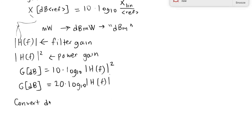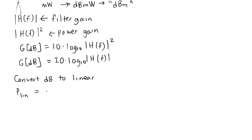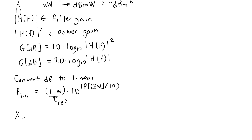To convert back to linear values, take the reference and multiply it by 10 to the power of the dB value divided by 10. The reference is multiplying this unitless value, so the reference provides the units. In general, the linear value equals the reference multiplied by 10 to the dB value divided by 10, where the 'dB ref' notation tells you to put the reference unit's letter next to the dB.